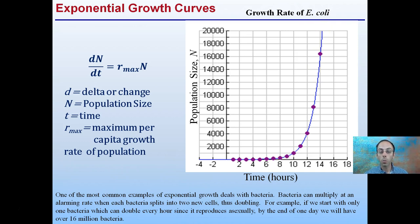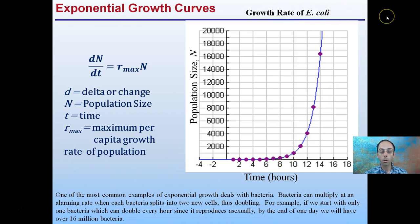For example, if we start with one bacterium that doubles every hour — since it reproduces asexually — by the end of the day, we'd start with one bacterium doubling every hour, and we would have over 16 million bacteria if it followed this exponential growth curve.